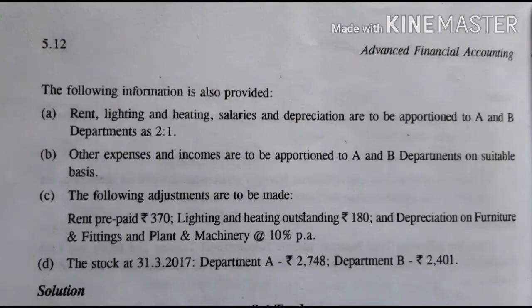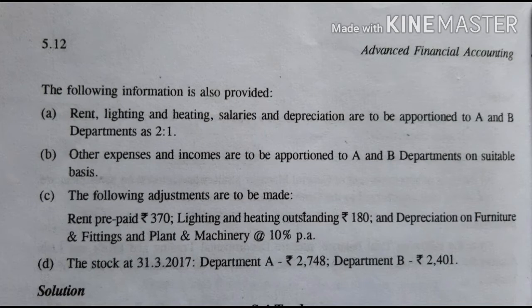The following information is also provided. First item: Rent, lighting and heating, salaries and depreciation are to be apportioned to Department A and Department B in the ratio of 2:1. Other expenses and income are to be apportioned to A and B departments on a suitable basis.